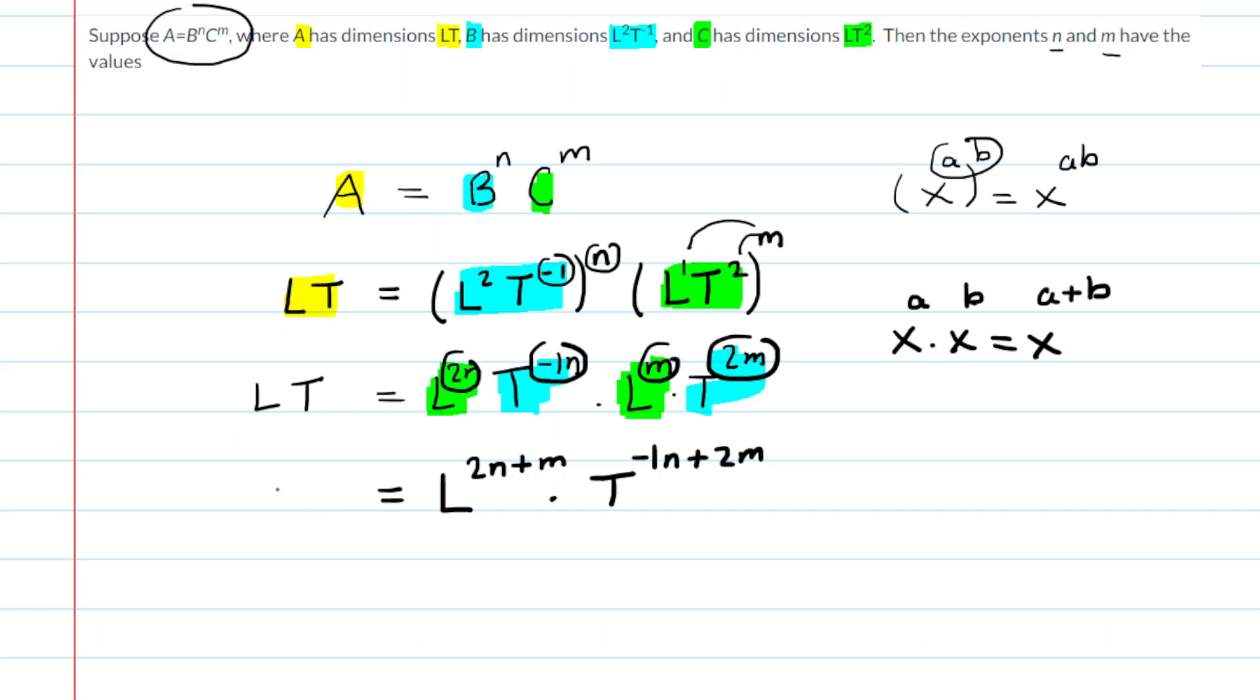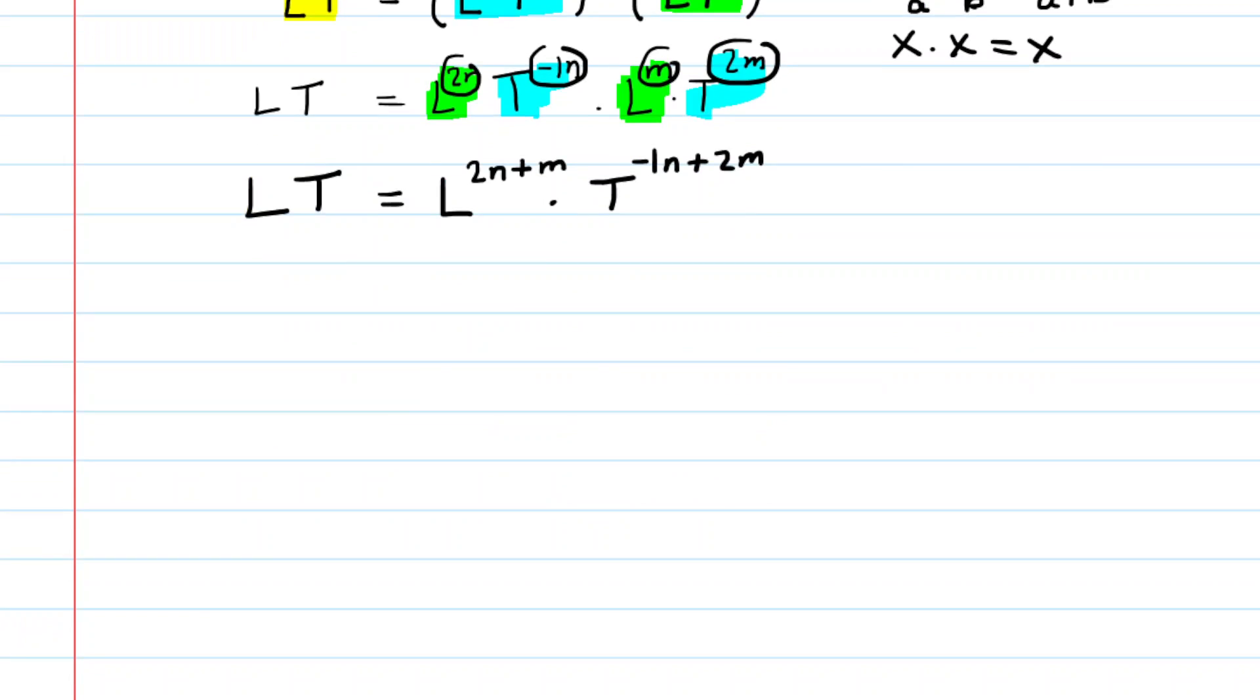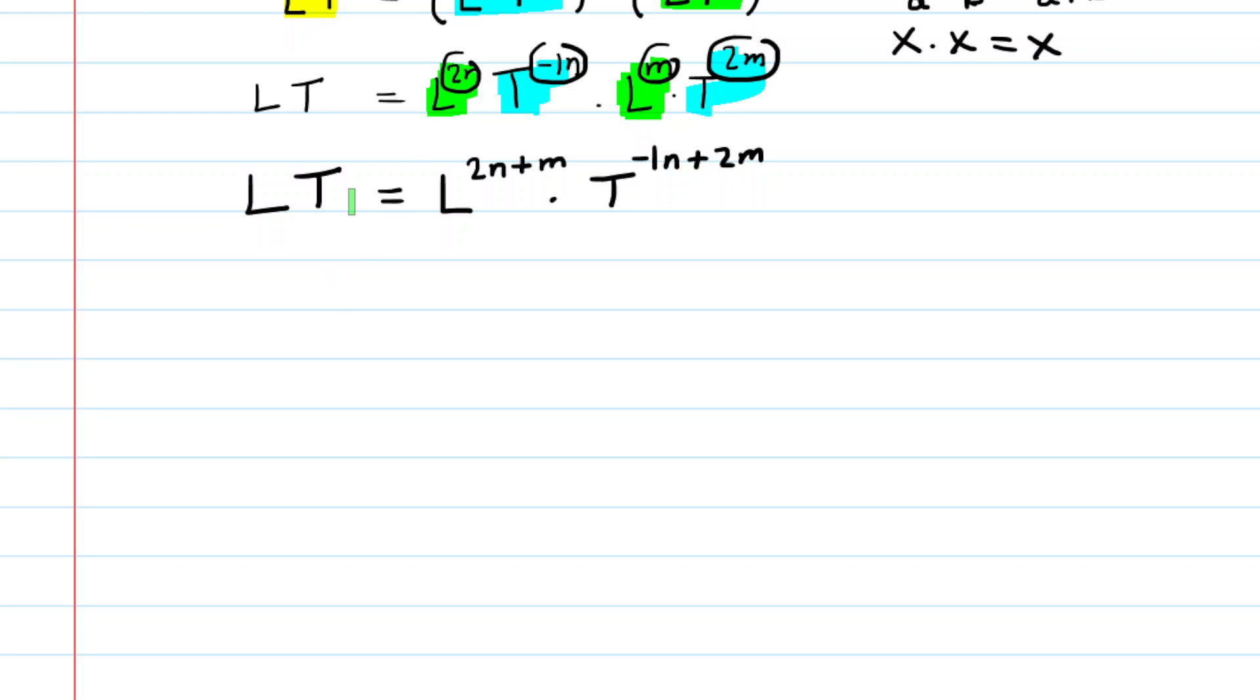And the left hand side is still l times t. Now we're going to start equating like terms. And let's talk about what we mean by that. So on the left side, you have l to the power of 1. Again, there's an implied 1 there. And on the right hand side, you have l to the power of 2n plus m. Now, in order for this equation to be true, the powers of l have to be equal. So what you're going to do is set the power of 1 equal to the 2n plus m.